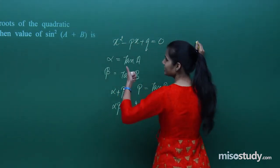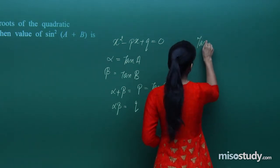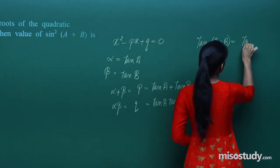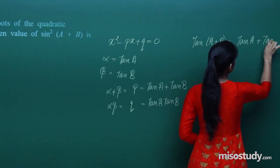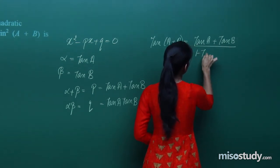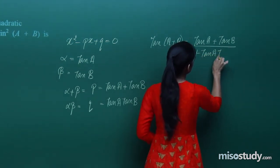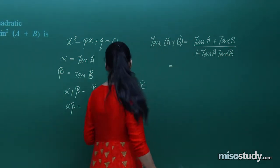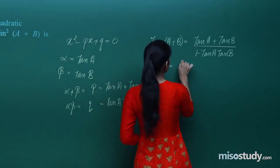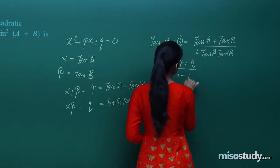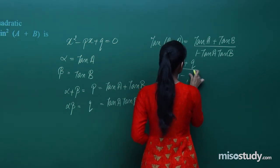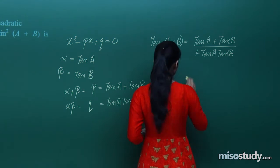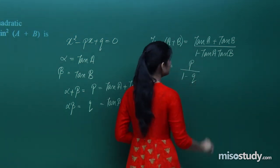Now we need to find sin²(a+b). First, recall that tan(a+b) = (tan a + tan b) / (1 - tan a · tan b). This involves the sum and product of tan a and tan b, whose values we already have. Plugging in: tan(a+b) = p / (1 - q).